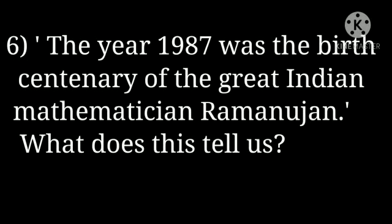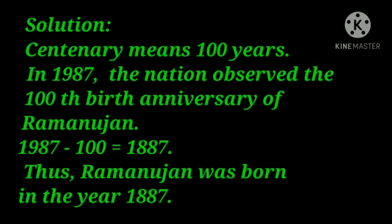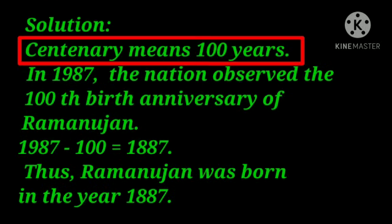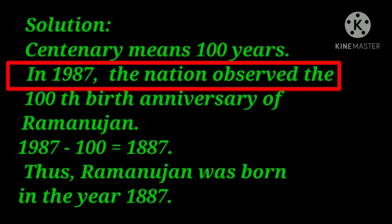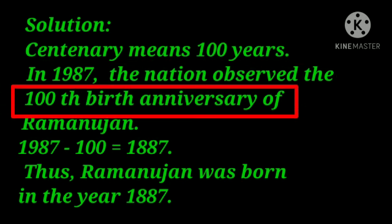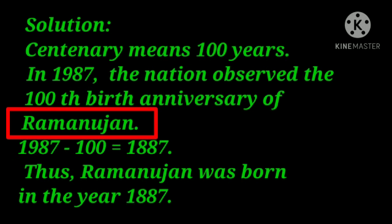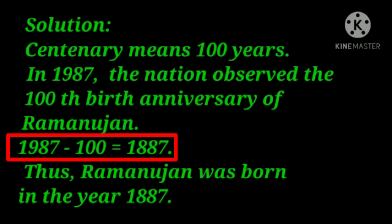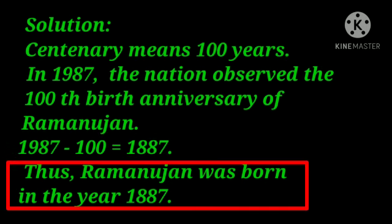The year 1987 was the birth centenary of the great Indian mathematician Ramanujan. What does this tell us? Centenary means 100 years. In 1987 the nation observed the 100th birth anniversary of Ramanujan. Therefore, 1987 minus 100 equals 1887. Thus, Ramanujan was born in the year 1887.